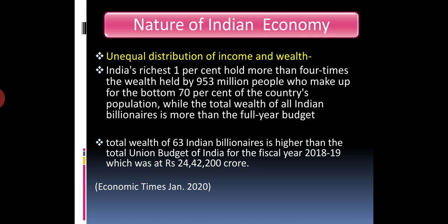The third characteristic is unequal distribution of income and wealth. In India, the distribution of income and wealth is highly unequal. India's richest 1% hold more than 4 times the wealth held by 953 million people who make up the bottom 70% of the country. So the richest 1% have more than 4 times the wealth of 70% of the population.